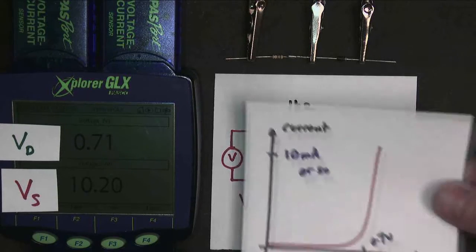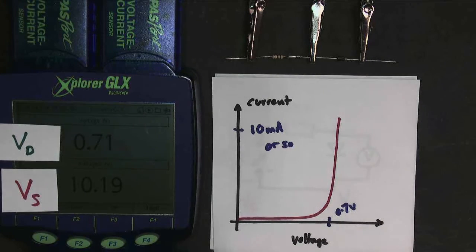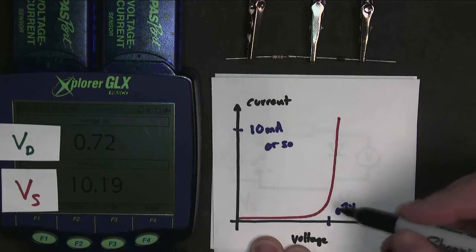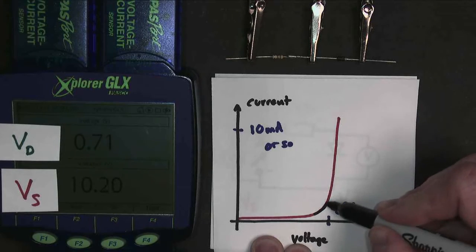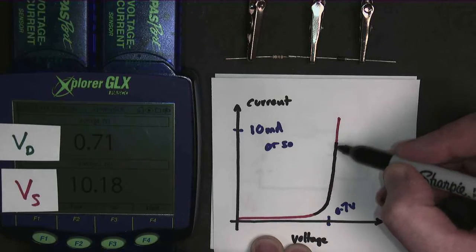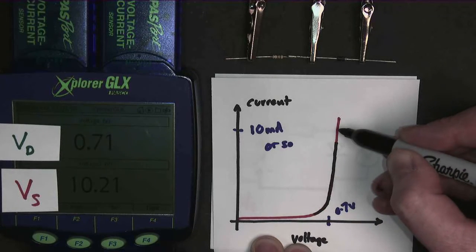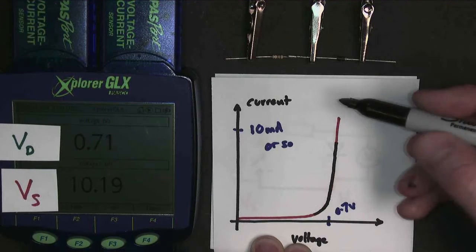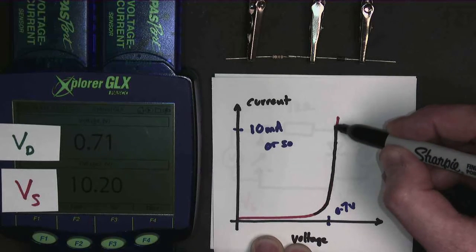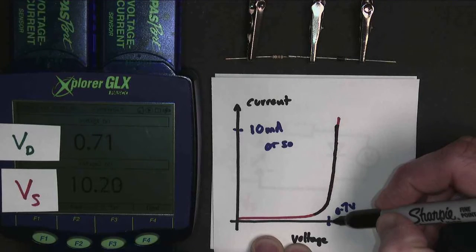Well, if we take our graph from before, what we're effectively doing is increasing the voltage across the power supply, which is increasing the current. And as the current goes up and up, this voltage here is hardly changing. Even when the current increases to 10 milliamps—which at 10 volts I would get through my 1 kilo-ohm resistor—I'm only just above 0.7 volts.